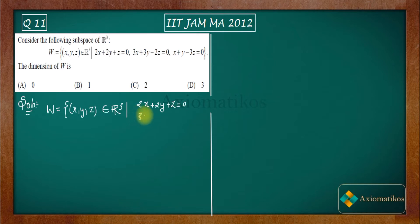And the last one is x + y - 3z = 0. So these are the three equations that we have.